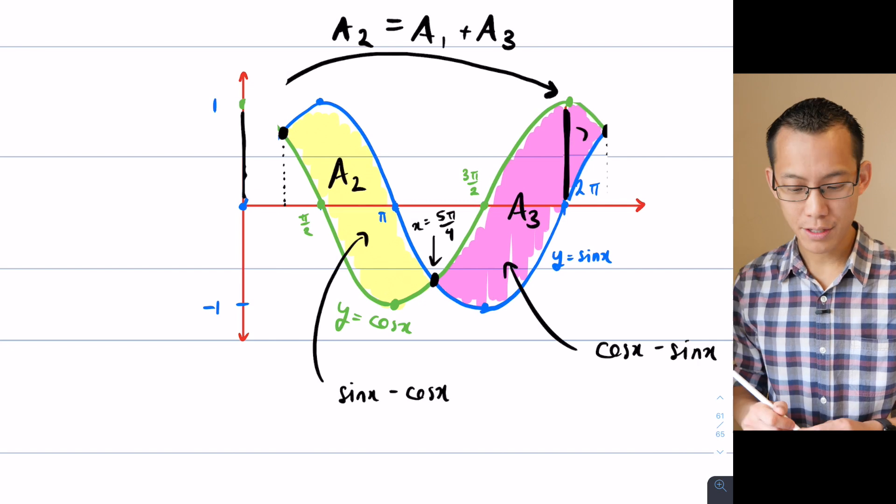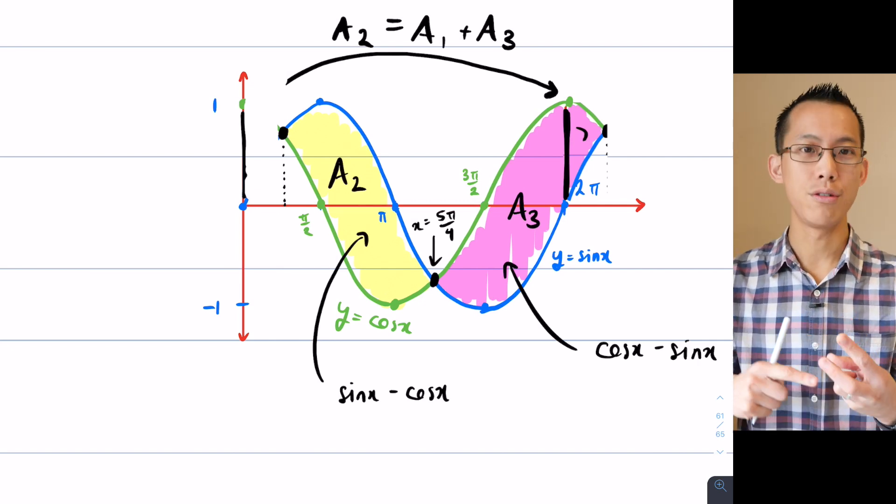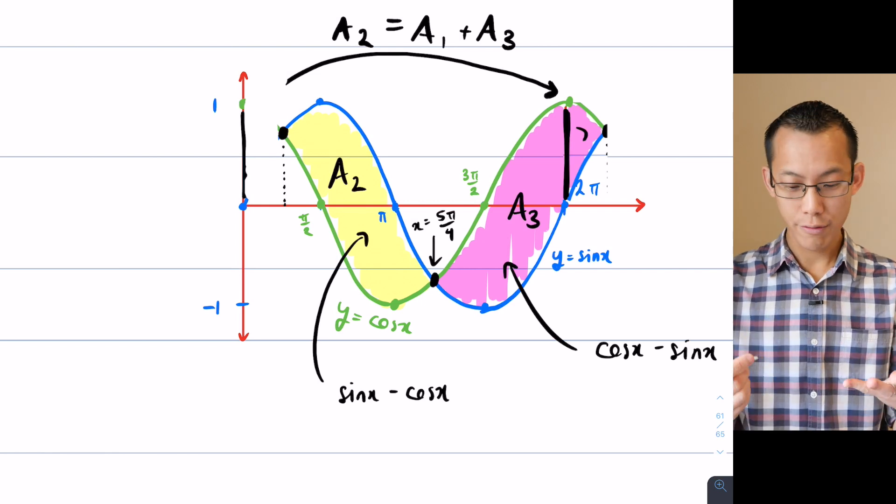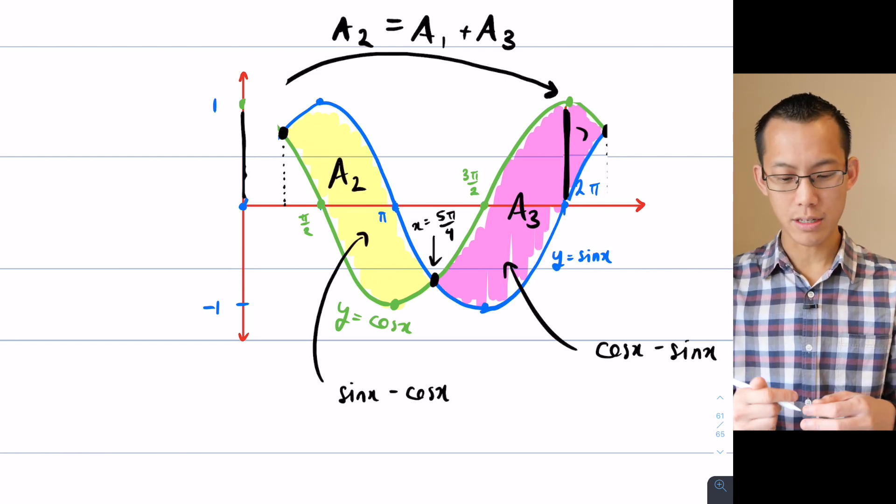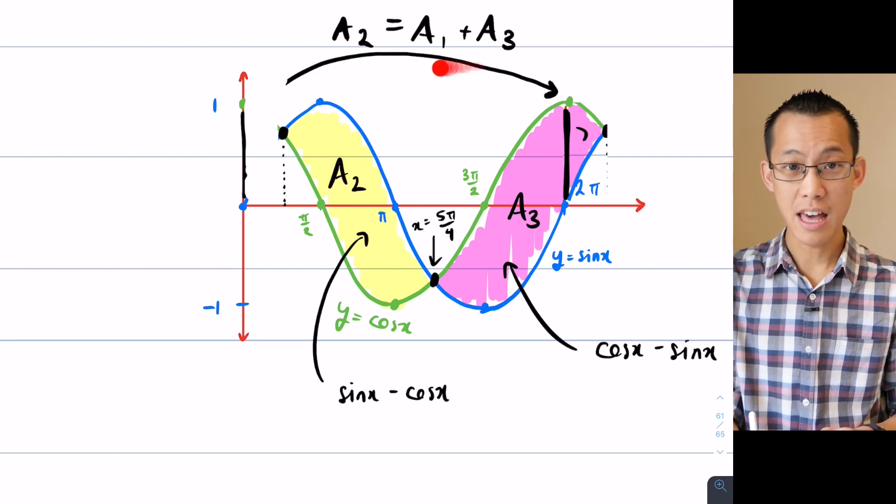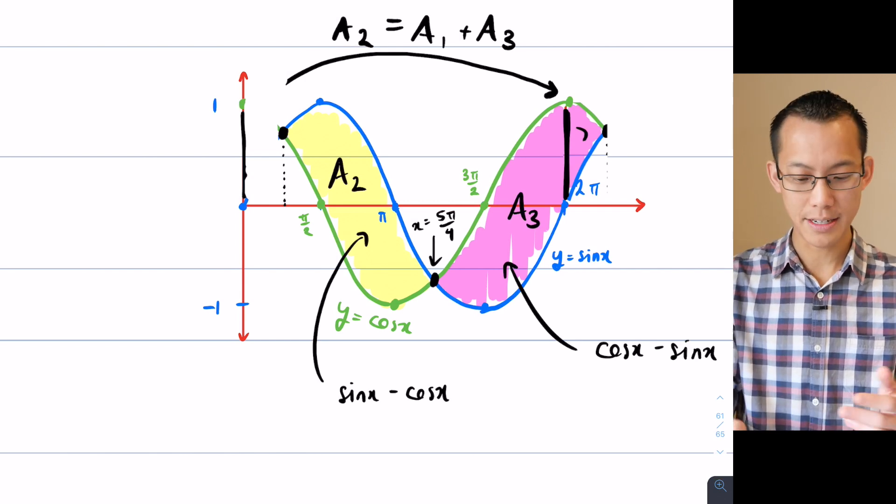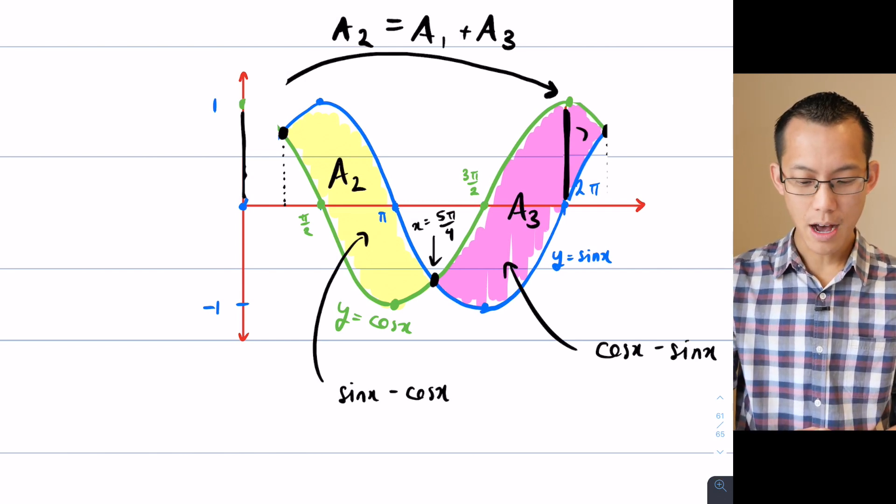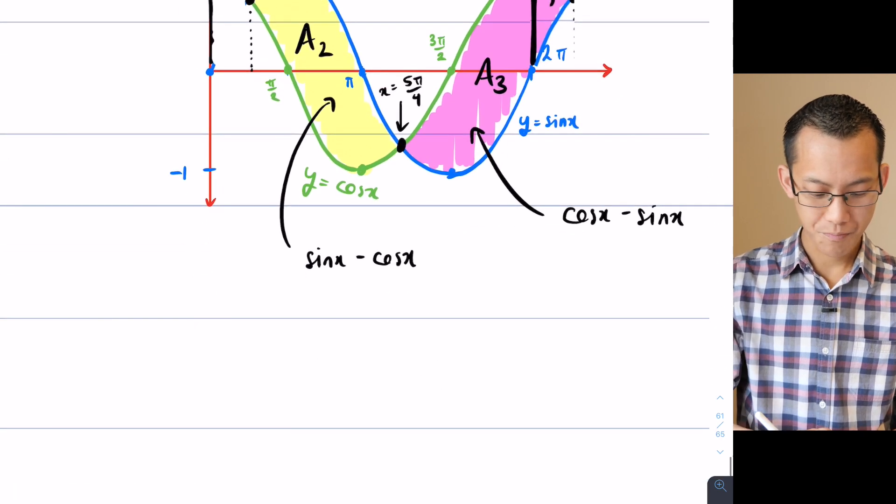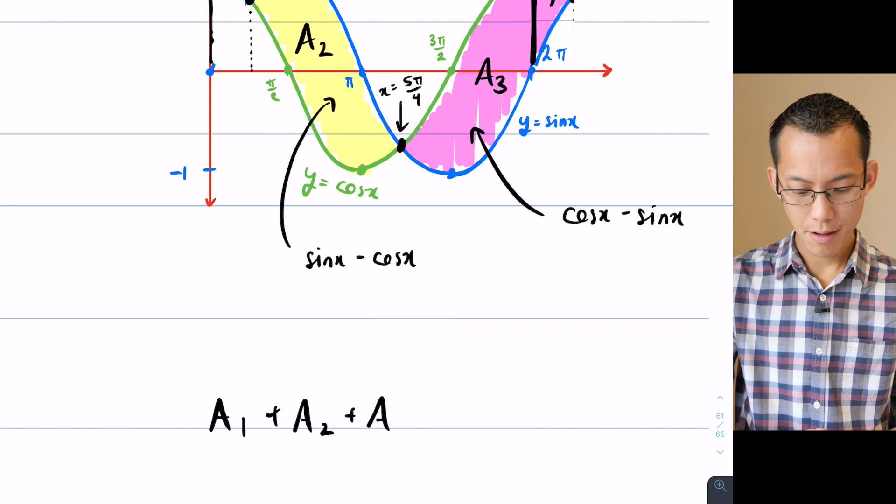So in order to work out the total area, which is A₁ plus A₂ plus A₃, what I can really do is I can just say, well, just work out one of those areas, either the left-hand side or the right-hand side, and then just double it. Once you've done that, you've got all three combined together.